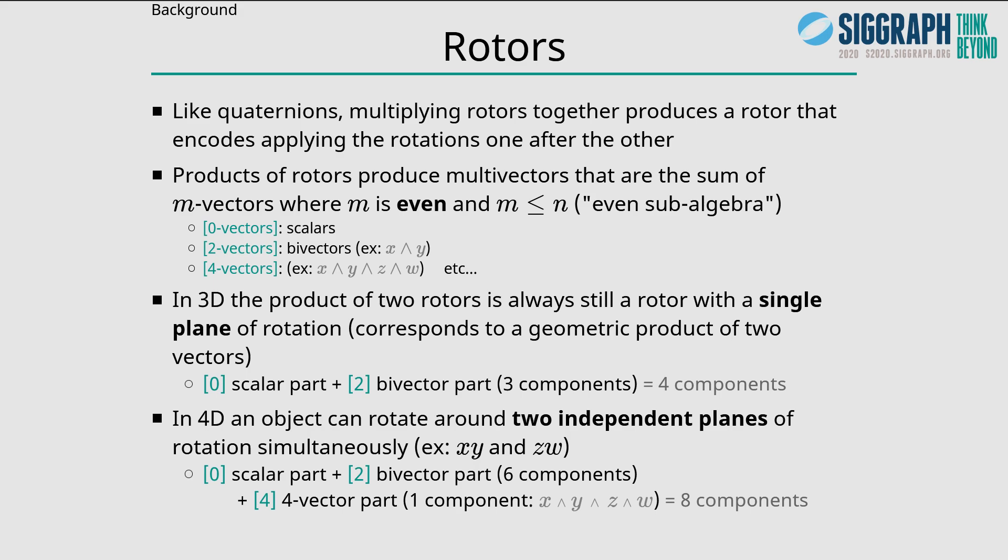In 3D, the product of two rotors is still a rotor with a single plane of rotation, so there is a scalar part and a bivector part only. But in 4D, an object can rotate along two independent planes of rotation simultaneously, for example the xy plane and the zw plane at the same time. That means if you have two rotors rotating around independent planes, then when you multiply them together, it makes a rotor that has a four-vector part.